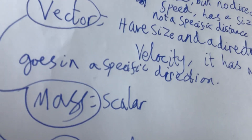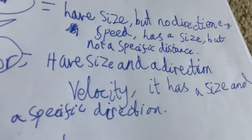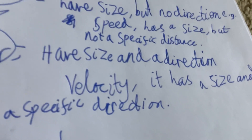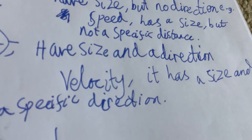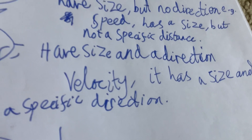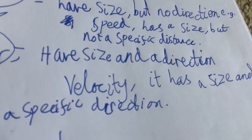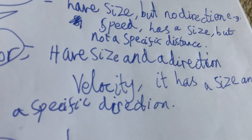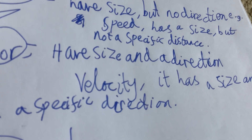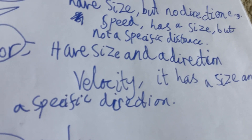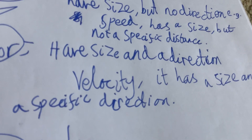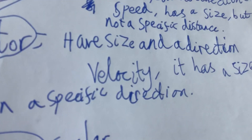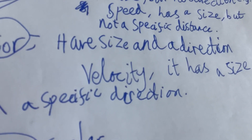I'm going to explain scalars and vectors. A scalar is something that has size but no direction — like speed. For example, a speed limit tells you how fast you're going, but it doesn't have a specific direction.